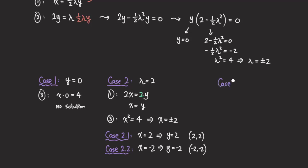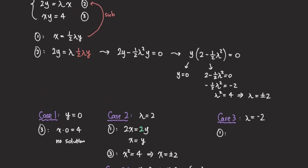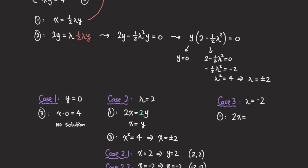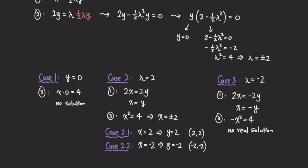Case 3: λ = -2. Plugging λ = -2 into equation 1 gives 2x = -2y, so x = -y. Substituting into the constraint: (-y)·y = 4, which means -x² = 4. But x² is non-negative, so -x² is non-positive — it cannot equal 4. There is no real solution here. So our only critical points are (2, 2) and (-2, -2).